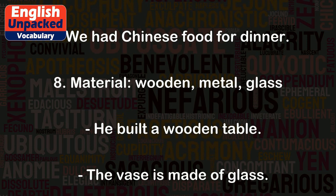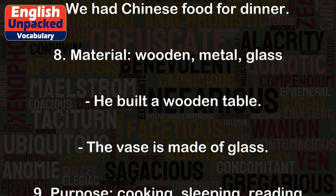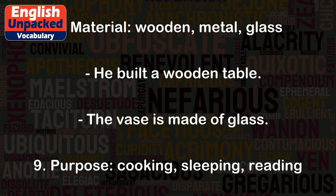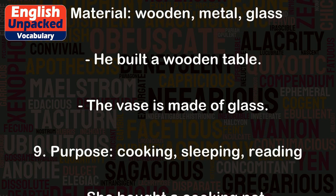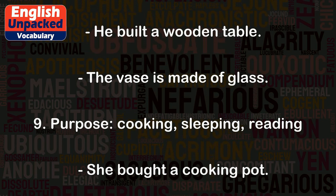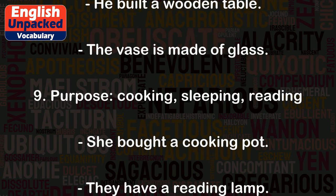8. Material. Wooden, metal, glass. He built a wooden table. The vase is made of glass.